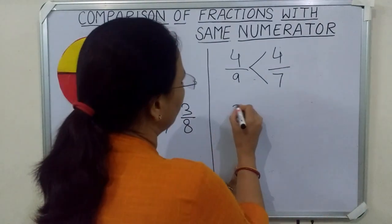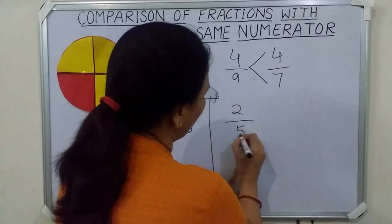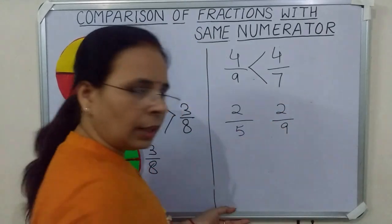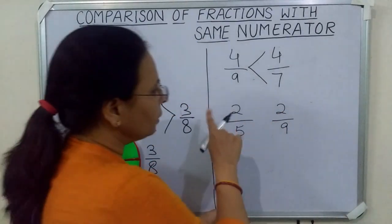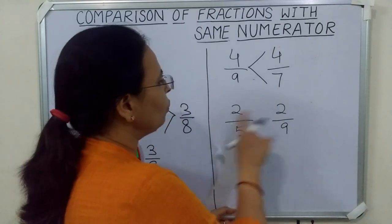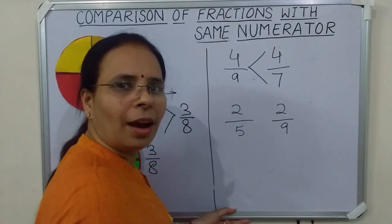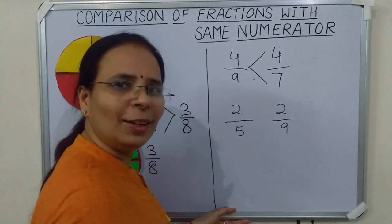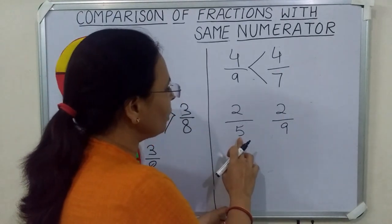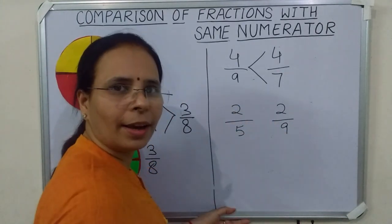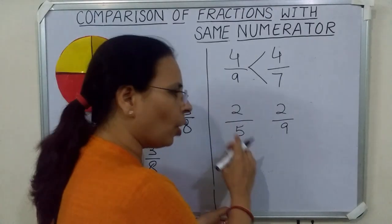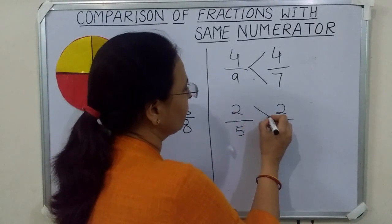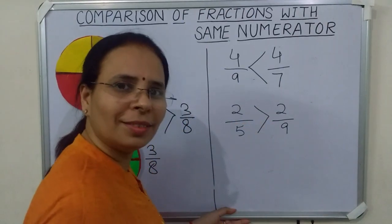One more example: two upon five and two upon nine. Children, in these fractions we can see the numerators are same, so we will compare the denominators. Five is smaller than nine, which means two upon five is greater than two upon nine.